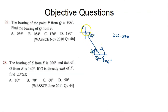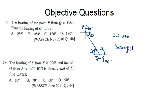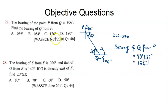To get the bearing of Q from P, we read from the north pole of P in the clockwise direction to meet the terminal line leading to Q. Joining from the north pole of P to the terminal line means adding 90 degrees to it. So the bearing of Q from P equals 90 degrees plus 36 degrees, giving a total angle of 126 degrees — possible answer C.